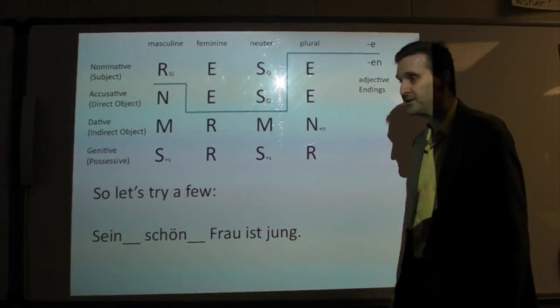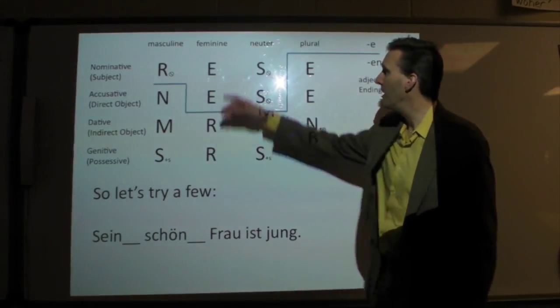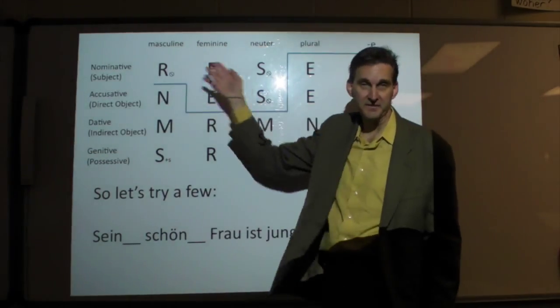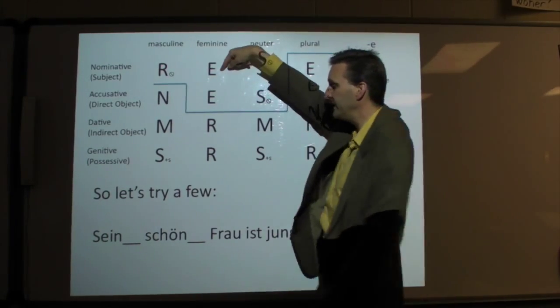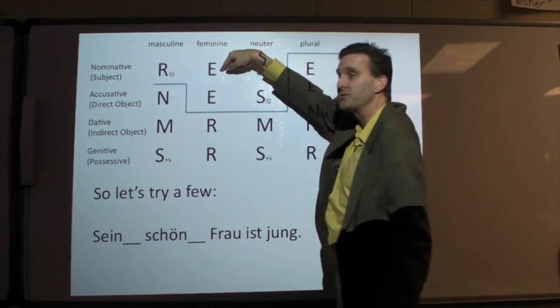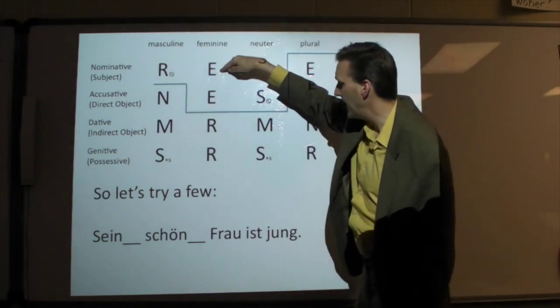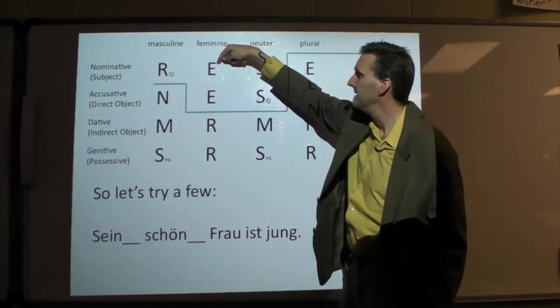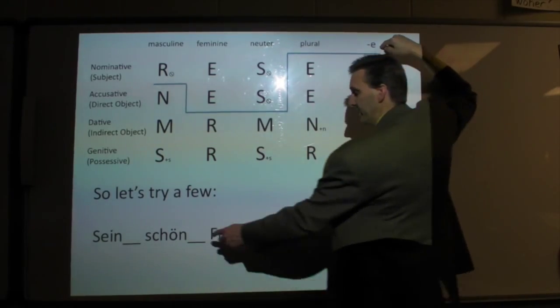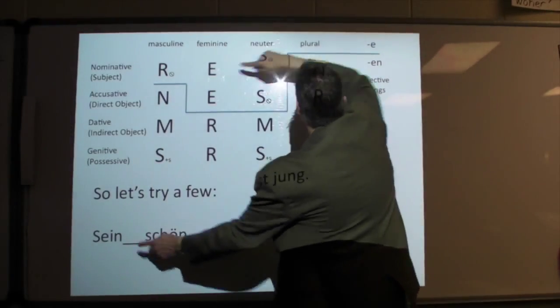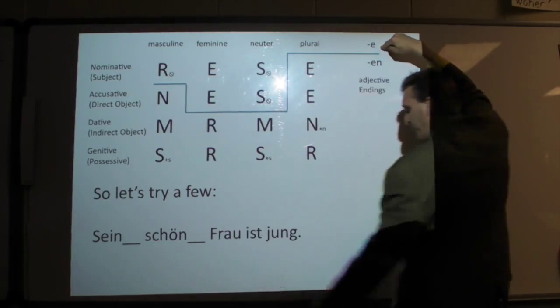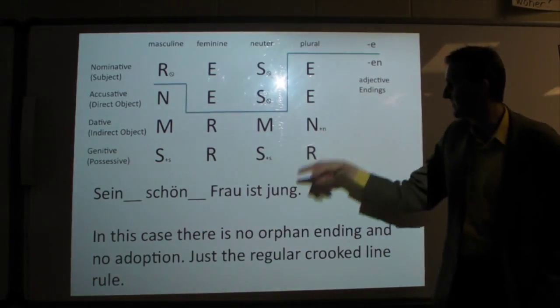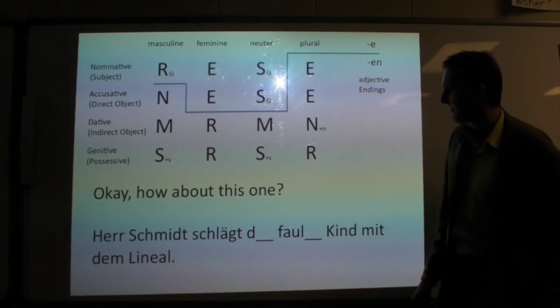His beautiful wife is young. How about that? Well, Frau is feminine, and she's quite clearly the subject of the sentence, so that puts us right here. So, I need the seine, and there's no orphaning going on. So, for this one, and the adjective here, I simply follow the crooked line rule. The crooked line, it's above the line, so I need this E right there. So, seine schöne Frau ist jung.